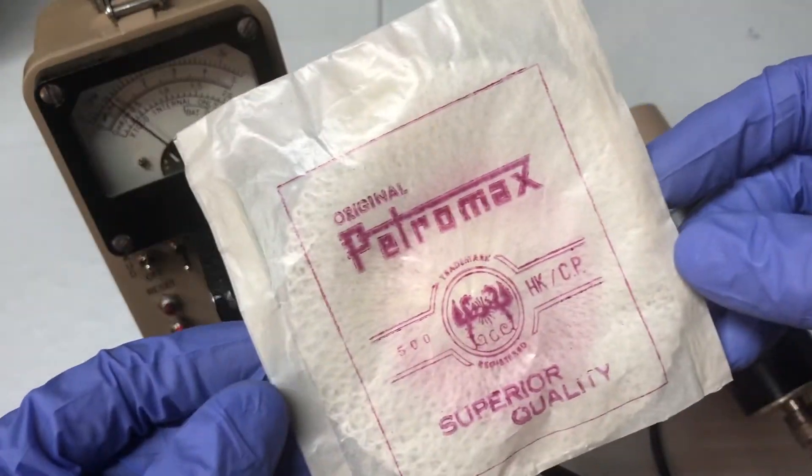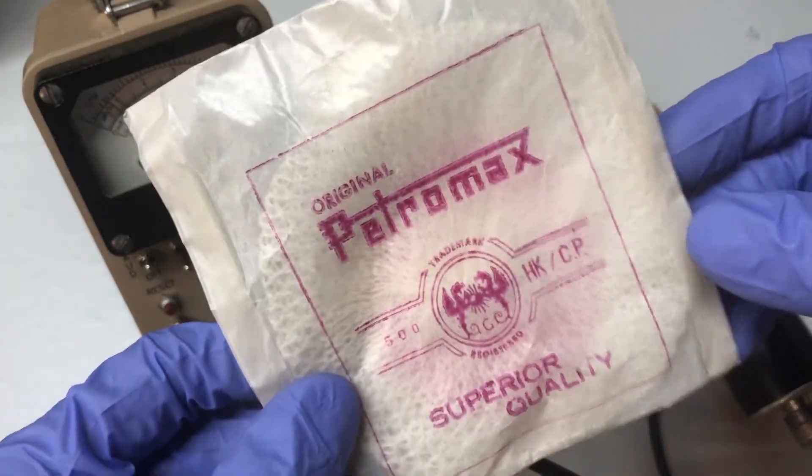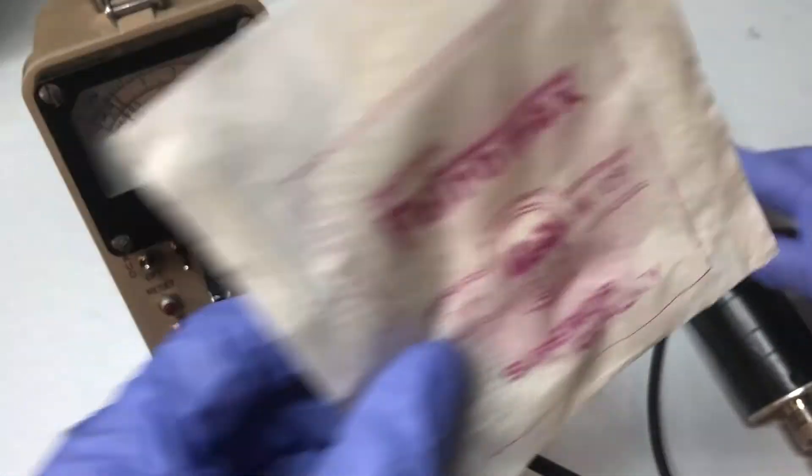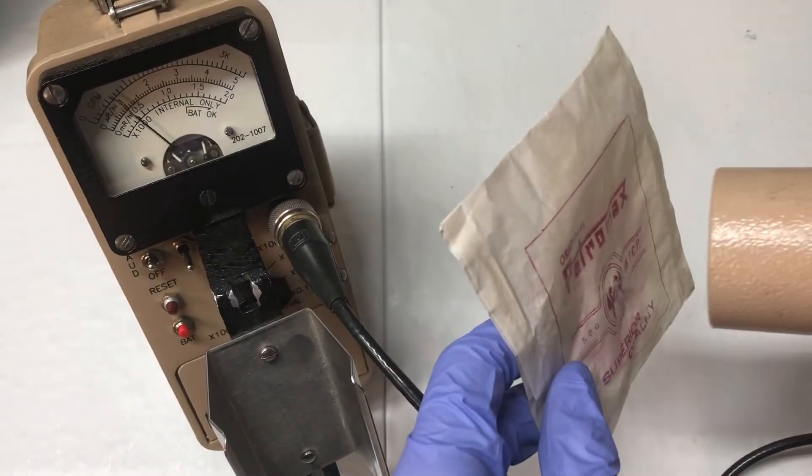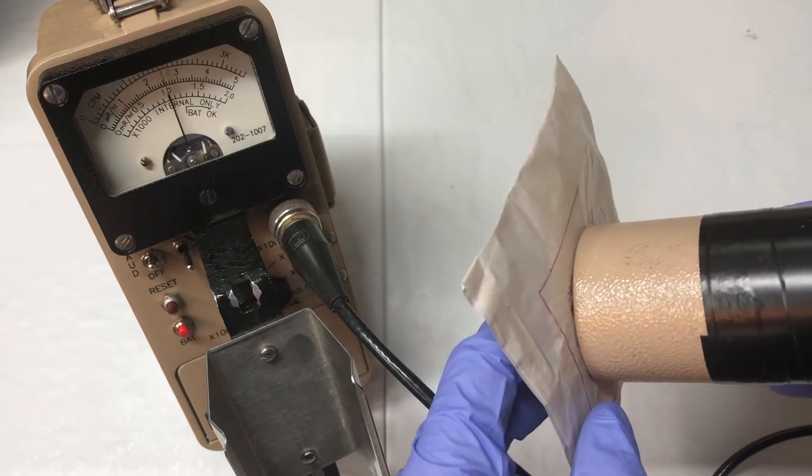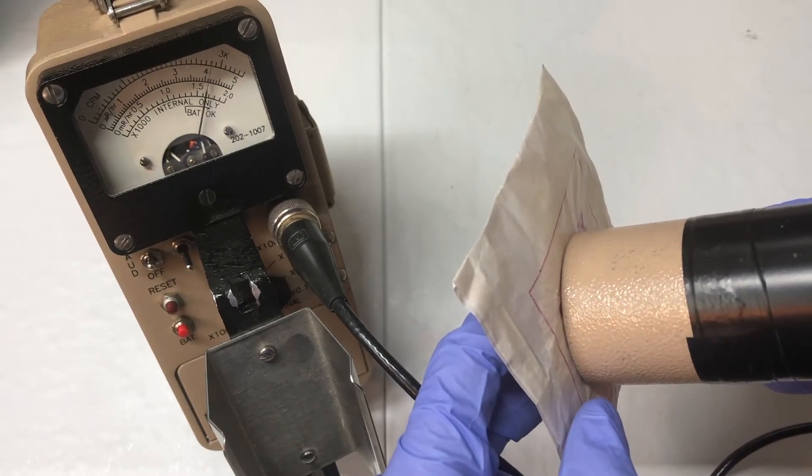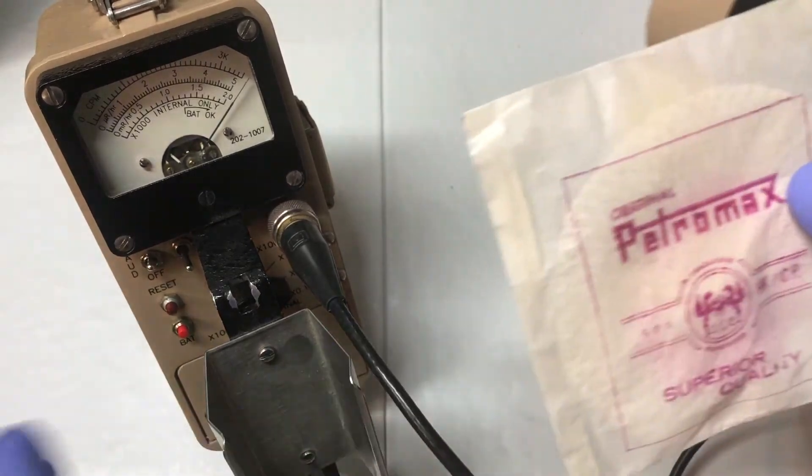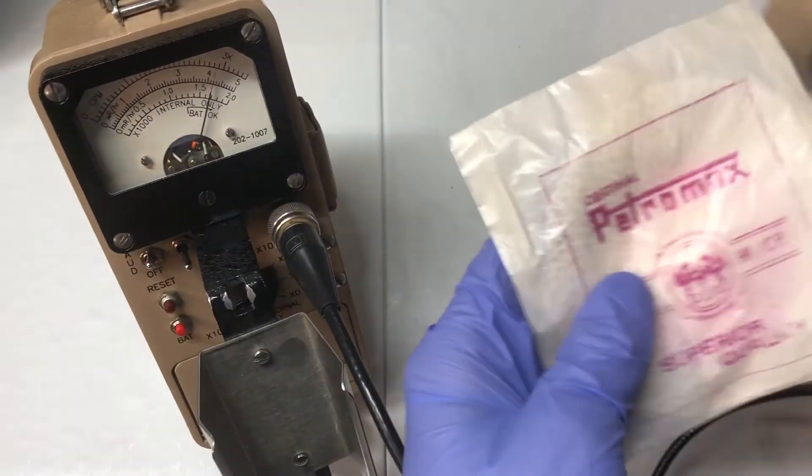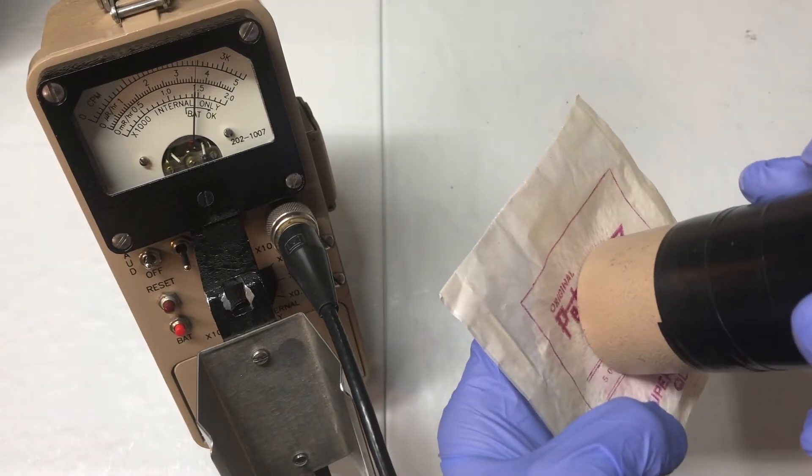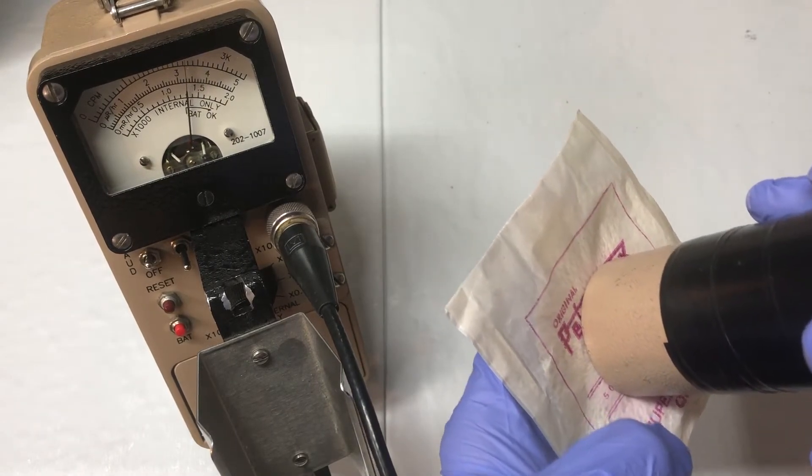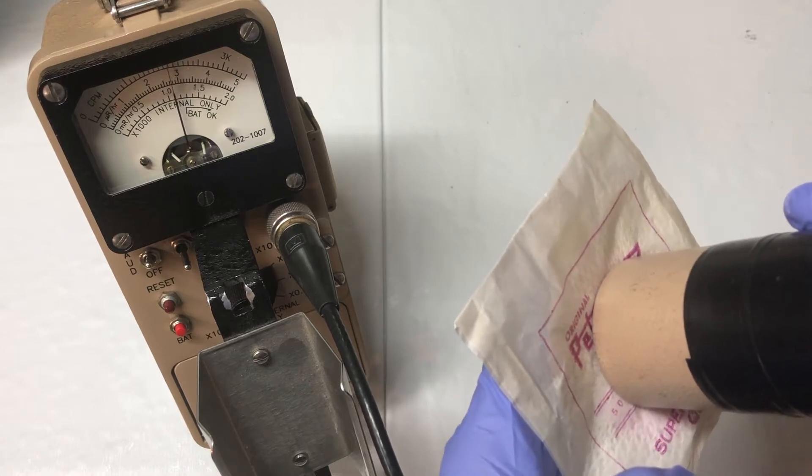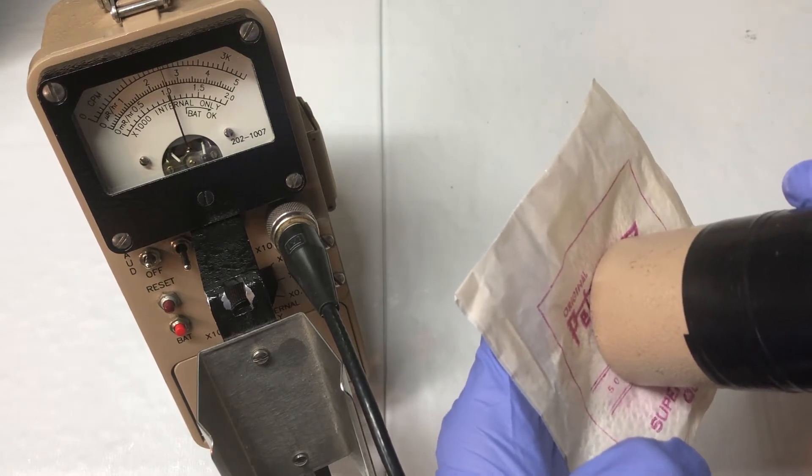First on the chopping block, we have the original Petromax thoriated lantern mantles. It maxed out, so let's move up to times 10, and we see that it's slowly falling until it'll settle out.